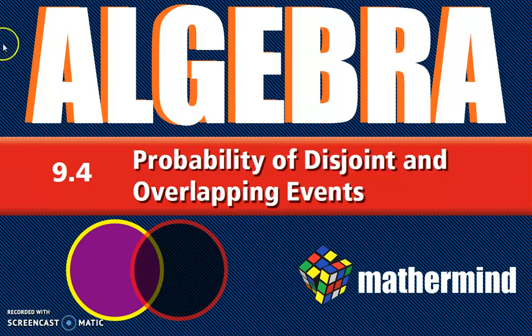Hello and welcome back to Algebra. We are in Chapter 9, Section 4. We're talking about probability of disjoint and overlapping events.